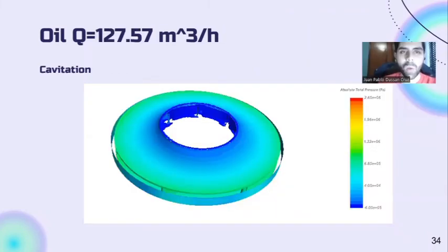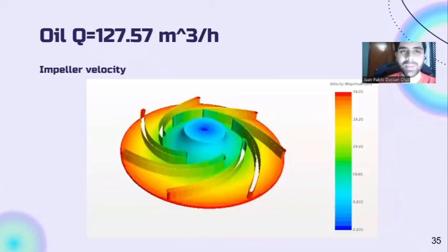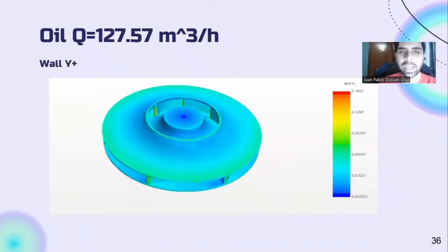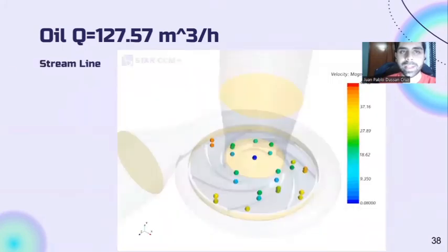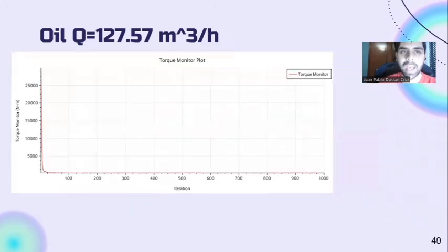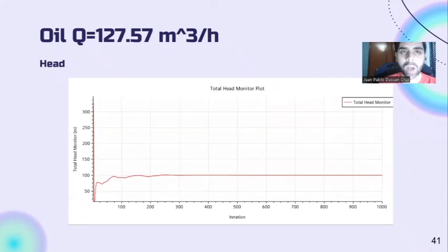Now we have oil with a flow of 127.57 m³/hr. The simulation confirms that the steam pressure is greater than the steam pressure of water at the specific temperature of the project, and that is the reason we don't have cavitation. The impeller velocity shows it was well built, having a lower speed in the center that increases as its radius increases. The wall Y-plus is between 0 and 5, which reconfirms the proper meshing of the pump. In the streamline, we can see the actual behavior of the oil inside the pump. The final efficiency is 0.56 and the total head is 100 meters.